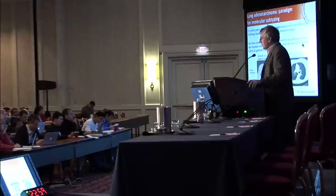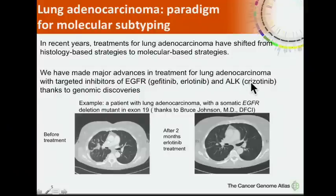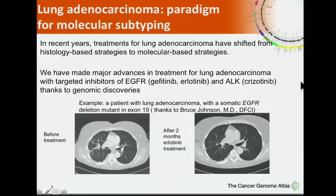While lung cancer is generally associated with smoking, lung adenocarcinoma uniquely among lung cancer histologies does often occur in nonsmokers, and is especially prevalent in women, in younger patients, and in patients from East Asia or of East Asian origin. Lung adenocarcinoma has really become a paradigm for molecular subtyping, as treatments have shifted from histology-based to molecular-based strategies, with major advances using targeted inhibitors of both EGFR, such as gefitinib or erlotinib, and ALK, such as crizotinib.